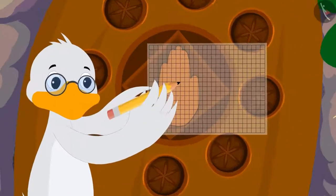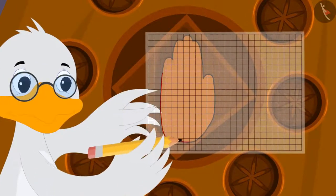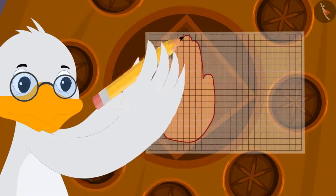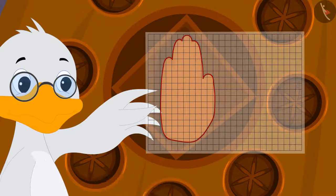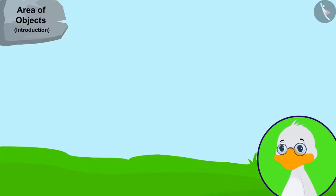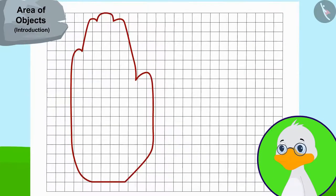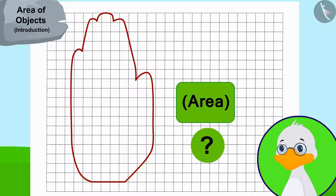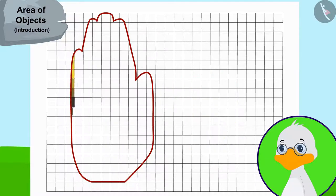Uncle immediately traced the hand impression on the door onto a paper in this way. This paper has similar squares of one square centimeter each. Uncle then counted the number of squares covered by the hand impression to find the area of the hand impression.